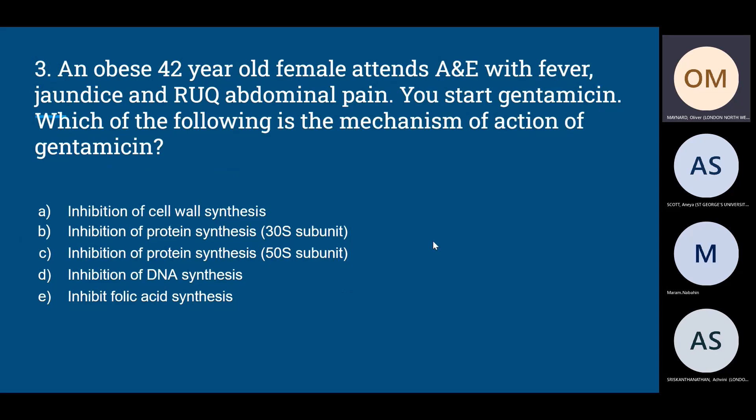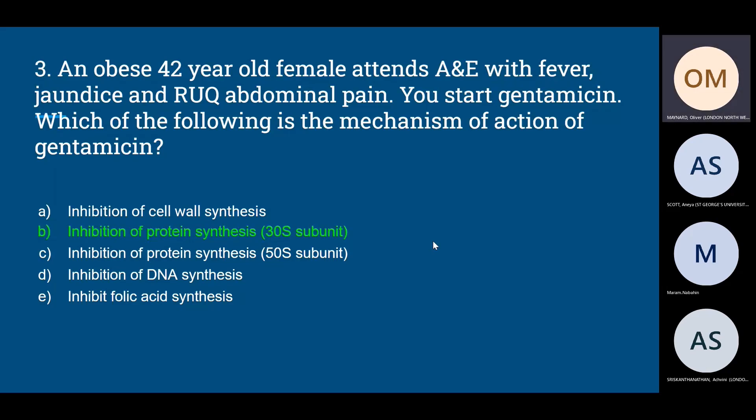Question three: an obese 42-year-old female presents with fever, jaundice, and right upper quadrant pain. You start gentamicin. What is the mechanism of action of gentamicin? Options: A) inhibition of cell wall synthesis, B) inhibition of protein synthesis at the 30S subunit, C) inhibition of protein synthesis at the 50S subunit, D) inhibition of DNA synthesis, E) inhibition of folic acid synthesis. The answer is B — inhibition of protein synthesis at the 30S ribosomal subunit.